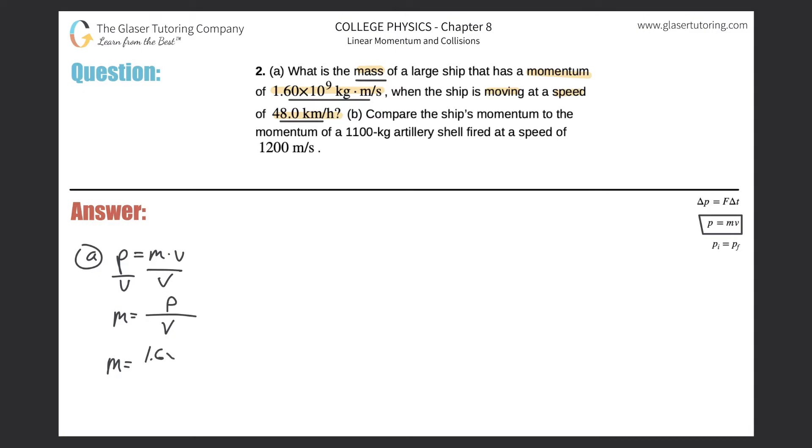So the momentum is 1.6 times 10 to the 9, divided by now the velocity. Now remember, they give us the velocity as 48.0 kilometers per hour, right? And what I need to do, let me just actually extend this line a little bit. What I need to do here is I need to convert that into meters per second. So therefore, let me get rid of the kilometers first. So kilometers would be on the bottom, meter on the top, 1,000 meters, one kilometer, bye-bye kilometers.